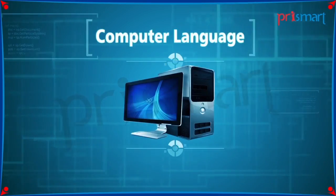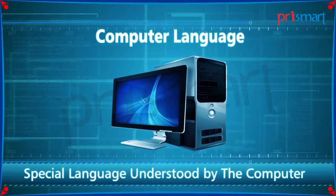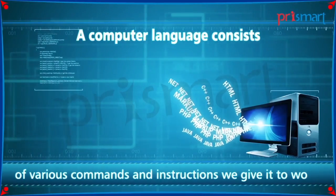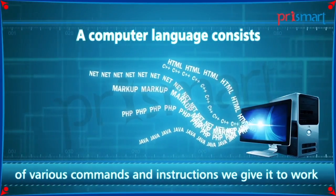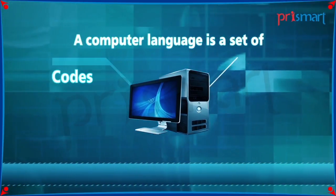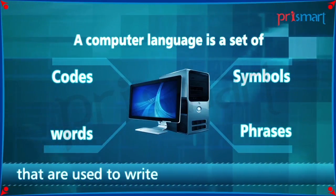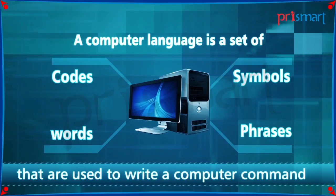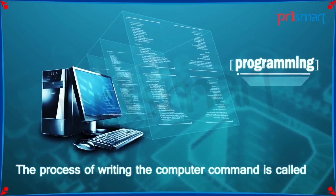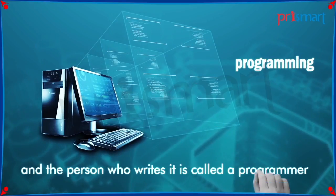A computer language is a special language understood by the computer. A computer language consists of various commands and instructions we give it to work. A computer language is a set of codes, symbols, words and phrases that are used to write a computer command. The process of writing the computer command is called programming. The person who writes it is called a programmer.